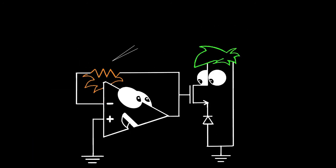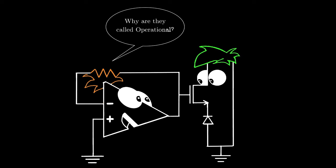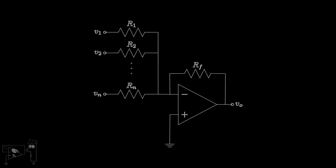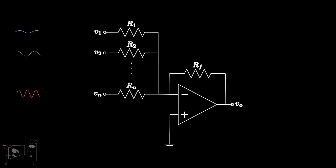So why are operational amplifiers called operational amplifiers in the first place? As you'll find out in the upcoming lectures, op-amps are very useful in carrying out mathematical operations on signals — right from addition and subtraction all the way to integration and differentiation. Many diverse circuits can be built using op-amps.